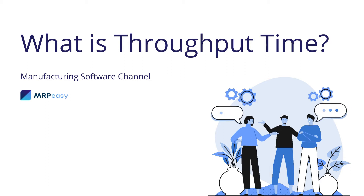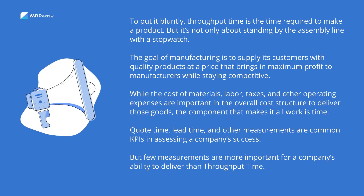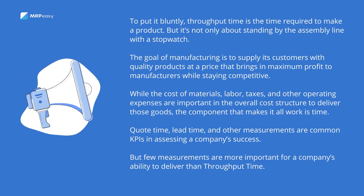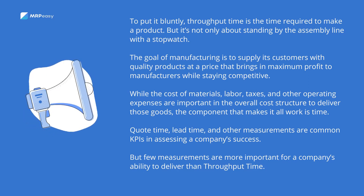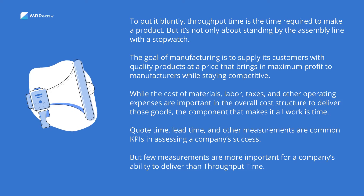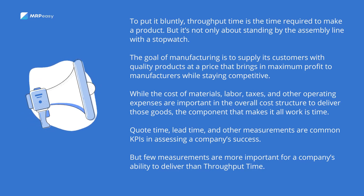What is throughput time? To put it bluntly, throughput time is the time required to make a product. But it's not only about standing by the assembly line with a stopwatch. The goal of manufacturing is to supply its customers with quality products at a price that brings in maximum profit to manufacturers while staying competitive. While cost of materials, labor, taxes, and other operating expenses are important in the overall cost structure to deliver those goods, the component that makes it all work is time.